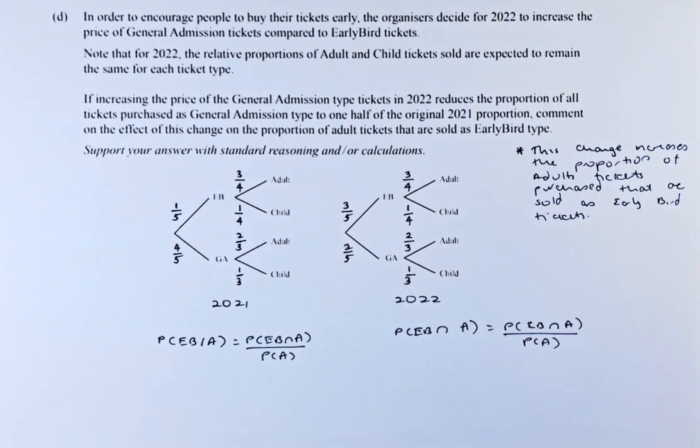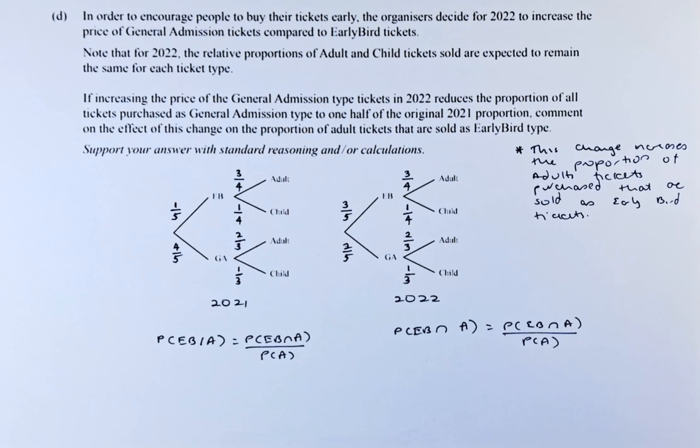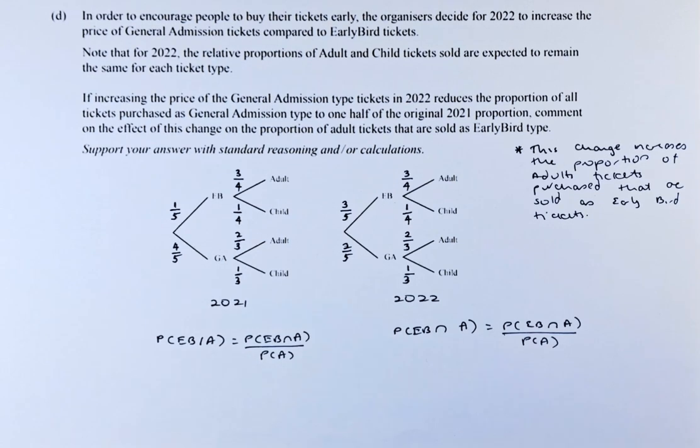Good day! In this video, we are going to solve question 1B of the 2021 NCEA Level 3 probability concept paper. Without further ado, let's read the question.